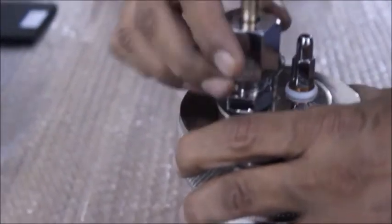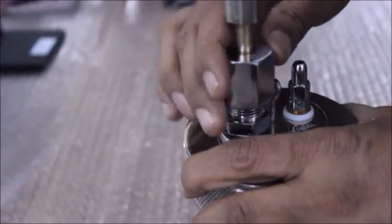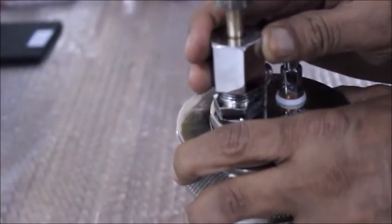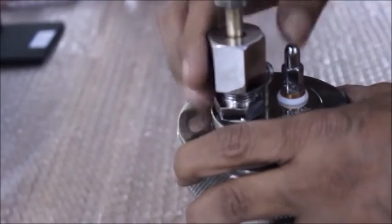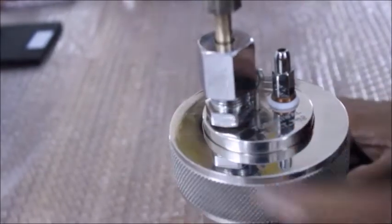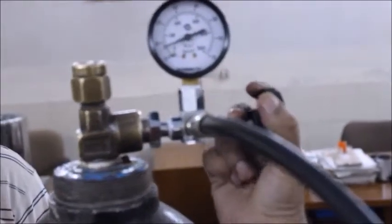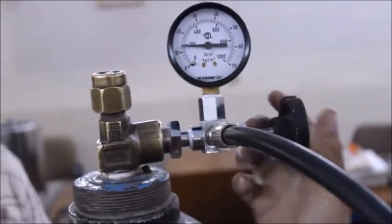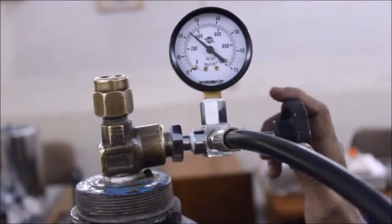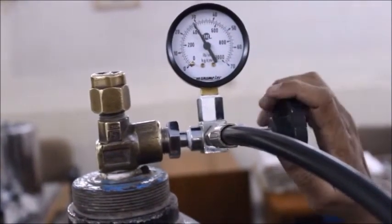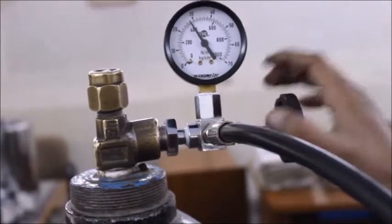You do not require a spanner for this. Loosen the black knob to release oxygen. When the dial hits 30, close the black knob to stop the flow of oxygen.